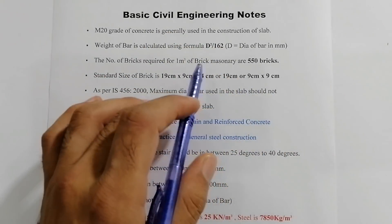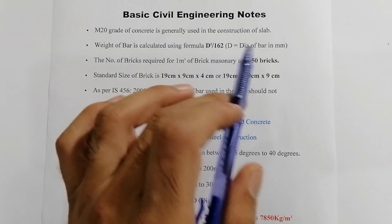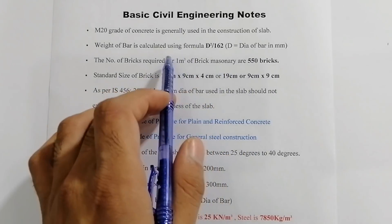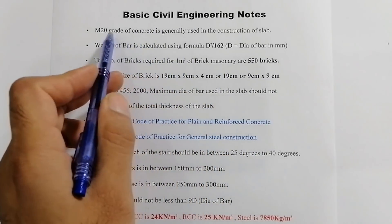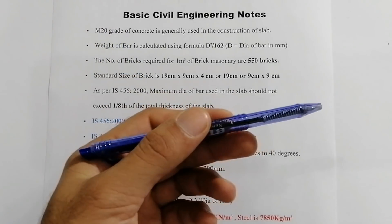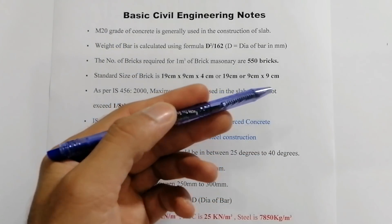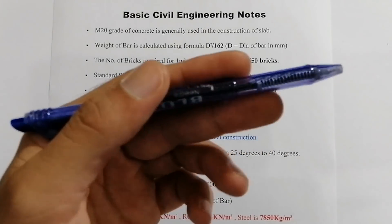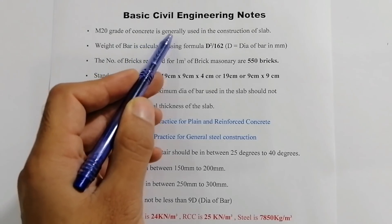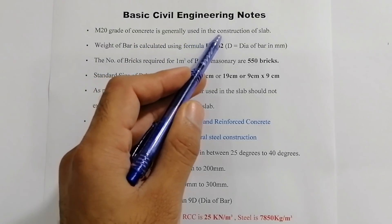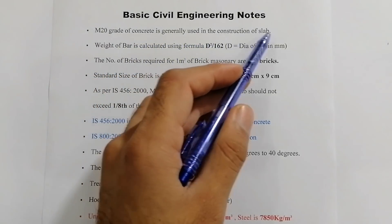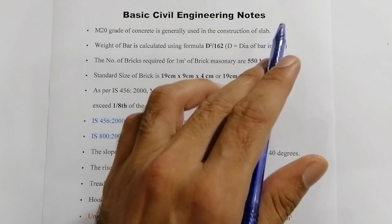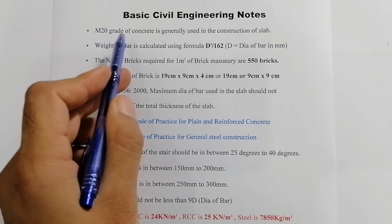Here the first point is very important for every civil engineer, especially those working on construction sites. This is very basic: M20 grade—we have different grades of concrete like M5, M7.5, M10, M15, M20. M20 grade of concrete is generally used in the construction of slabs. When you are doing concrete in RCC slab, you should use M20 grade concrete but not M15 grade concrete.